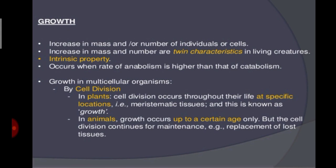However, growth and replacement of lost cells occur throughout life. In unicellular organisms, growth can be observed under the microscope by simply counting the number of cells. In multicellular organisms via in vitro experiments, such organisms grow by cell division. Since in unicellular organisms a single cell constitutes an individual, cell division is basically a means of reproduction.